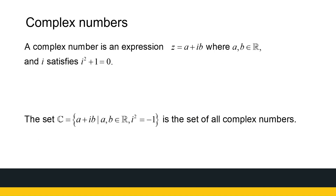A complex number is an expression z equal to a plus ib, where a and b are real numbers. This i has a very special property: i squared plus one equals zero, or equivalently, i squared equals minus one. There's no number i in the real numbers for which this is true, but this is why we're introducing this new number i. Depending on the field you're in, some fields use j because i is reserved for other variables, but for us we're going to be using i.